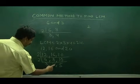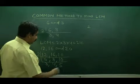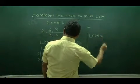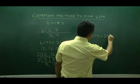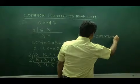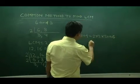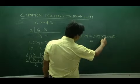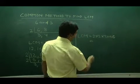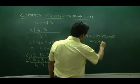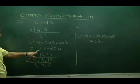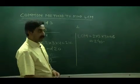There is no common factor among them. So we can write the LCM as 2 into 2 into 3 into 4 into 5, which is 2 to the 4, 3 to the 12, 4 to the 48, 5 to the 240. Means, least common multiple of 12, 16, and 20 is 240.